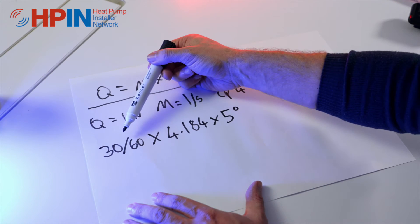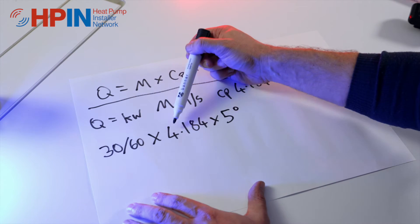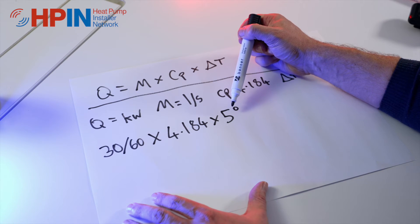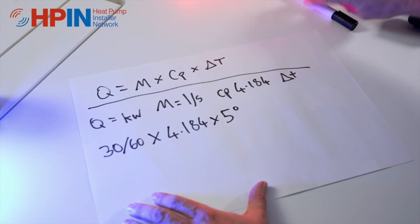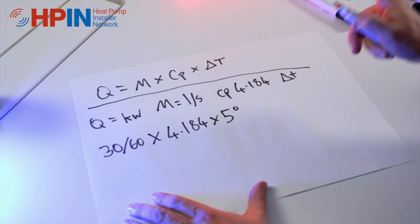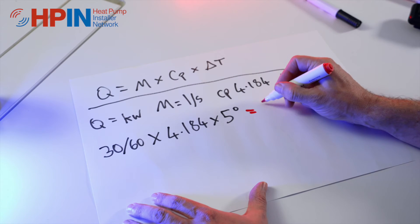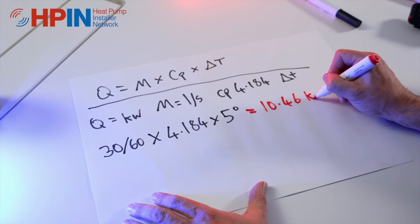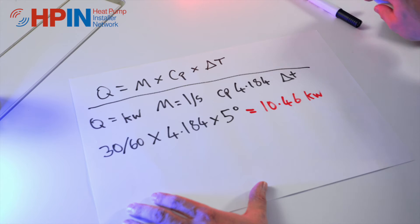So my 30 divided by 60 times my specific heat capacity of water times my 5 degree delta T is going to give me 10.46 kilowatts. So that's where I'm starting from.